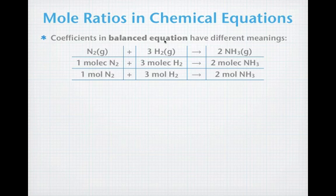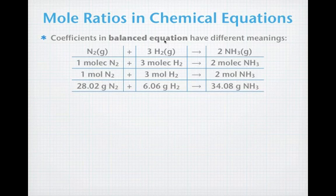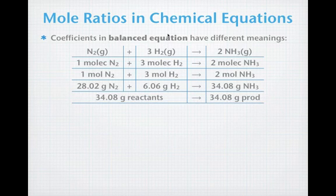You could think about this in terms of mass, but mass becomes a little more unwieldy because we have to bring in the molar mass. So, one mole of nitrogen is 28.02 grams. Three moles of hydrogen is 6.06 grams. If we bring those two together, we'll make two moles of ammonia, which is 34.08 grams. Or, if we look at this from a conservation of mass, we'll have 34.08 grams of reactants going in and 34.08 grams of products coming out. Later on in the year, we'll also see that we can relate this to liters of a gas as long as all of the materials are gaseous.